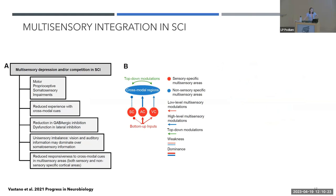I proposed a theory that multi-sensory integration could be impaired in spinal cord injury. After SCI, instead of a super-additive effect, we could find sub-additive effects, depression, or competition. This is because SCI involves motor, proprioceptive, and other sensory impairments that could reduce experience with cross-modal cues, cause reduction in inhibition and lateral inhibition, and create a sensory imbalance where strong modalities like vision and audition dominate over weak ones like somatosensory.